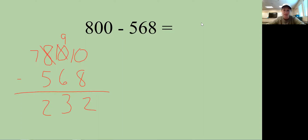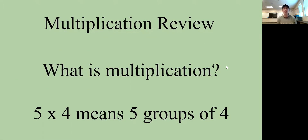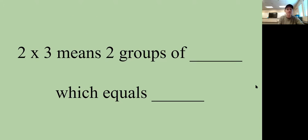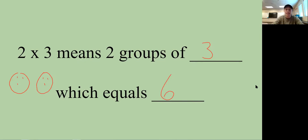All right, multiplication review. What is multiplication? Five times four means five groups of four. Two times three means two groups of three — draw two circles with three dots each. Count all the dots: two times three equals six.